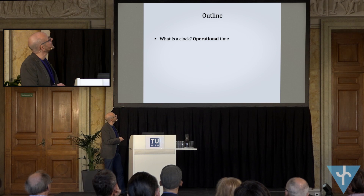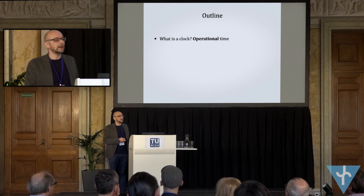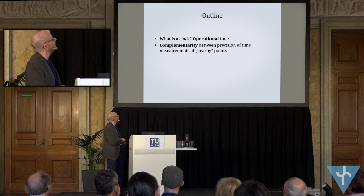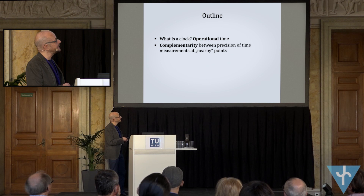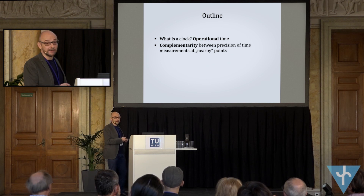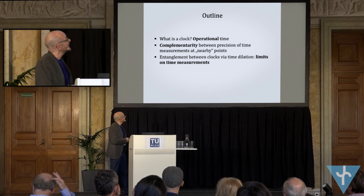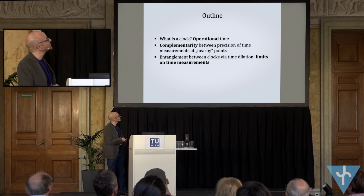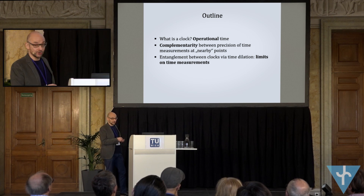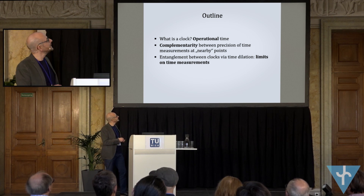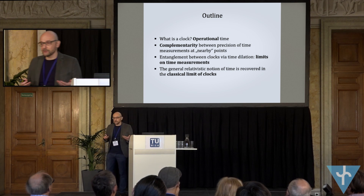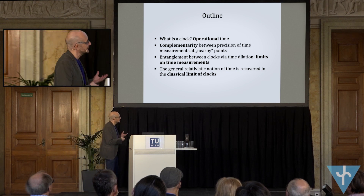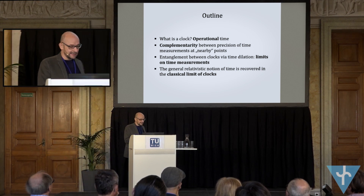Here is the outline of the talk. First, I will introduce what a clock is from an operational point of view. Then I will show a complementarity between the precision of time measurements at nearby points. Considering many clocks, I will show that this interaction leads to entanglement, which limits the notion of time locally. Finally, I will recover the well-known classical relativistic notion of time in the classical limits of clocks.